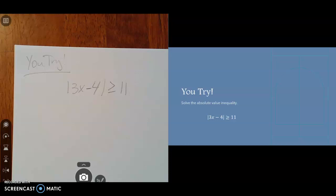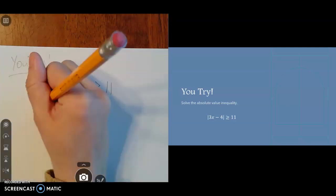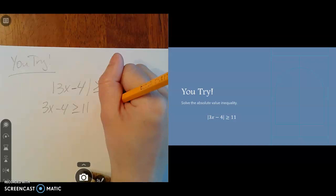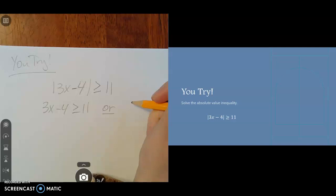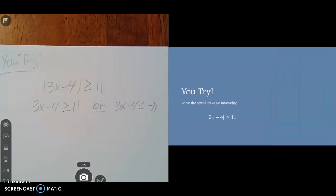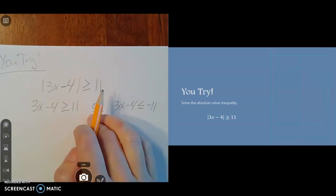The good news is your absolute value is already by itself, so we are ready to split it apart into two pieces. The first inequality will look like 3x minus 4 is greater than or equal to 11. It's greater than, so we're going to use the word or to separate our two compound inequalities. The other option is 3x minus 4, and the opposite of 11 is negative 11, and we're going to flip our sign around to less than or equal to. So we'll have 3x minus 4 is less than or equal to negative 11. Those are our two inequalities joined by the word or because it's greater than.